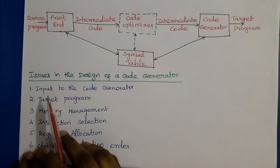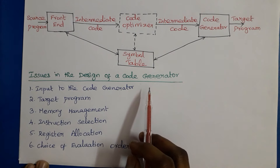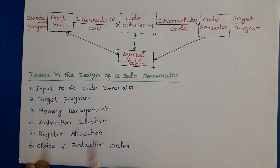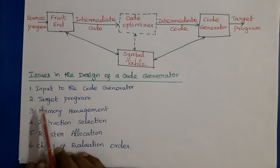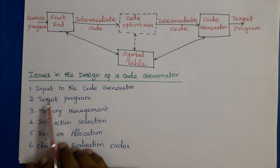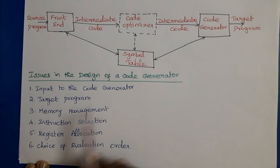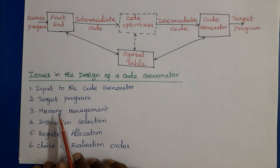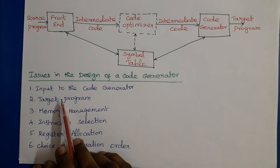Next, the issues in the design of a code generator. These are all the issues we need to consider when we design the code generator: input to the code generator, target program, memory management, instruction selection, register allocation, and choice of evaluation order. We will see each one by one.